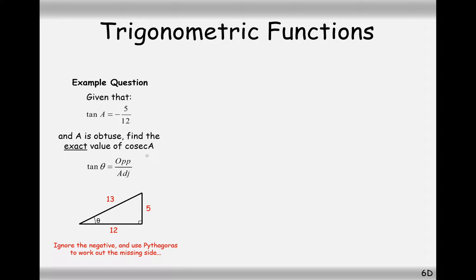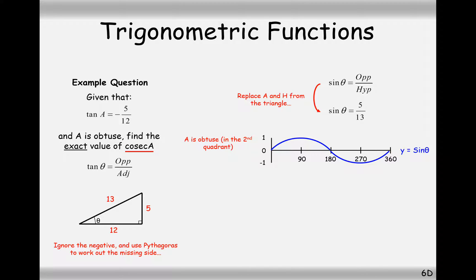Now we find the exact value of cosec. This time we're looking for sine, which equals opposite over hypotenuse. Looking at our triangle we've got 5 over 13. Since A is obtuse, let's check the sine graph - in this case it's on the positive side of the graph. So sine theta stays positive at 5 over 13, and therefore cosec equals 13 over 5.